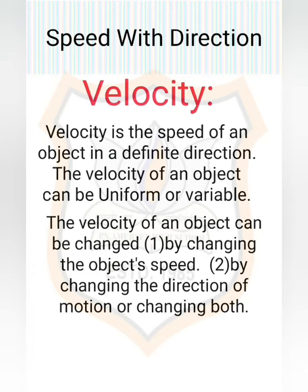Velocity is the speed of an object moving in a definite direction. The velocity of an object can be uniform or variable. It can be changed by changing the object's speed, direction of motion, or both. When an object is moving along a straight line at a variable speed, we can express the magnitude of its rate of motion in terms of average velocity.